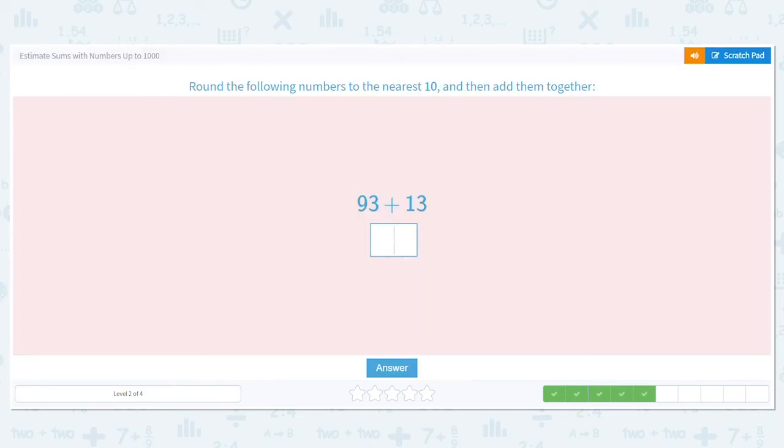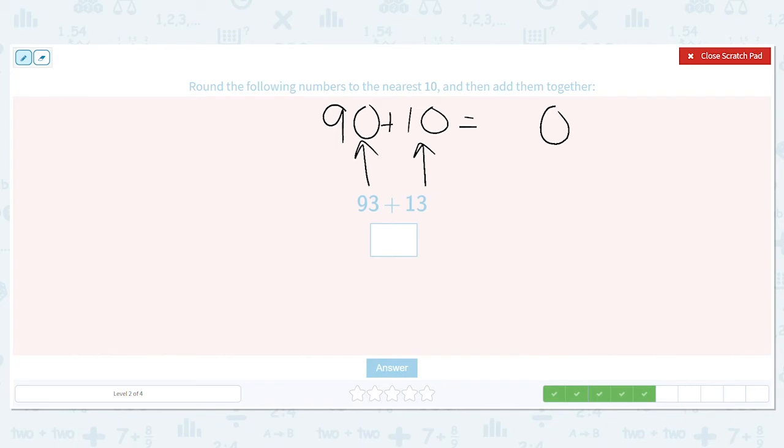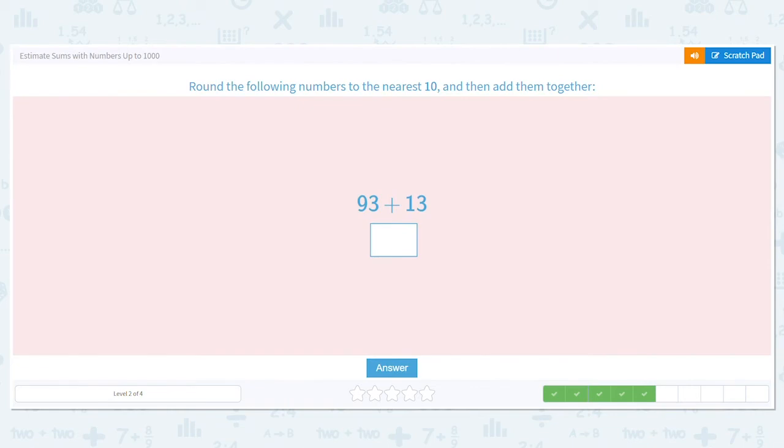Alright, let's do this one. Still rounding to the nearest 10. What does 93 round to? Does it round to 90 or 100? It rounds down to 90. How about 13? Is that closer to 10 or 20? It's 10. So what's 90 plus 10? 0 plus 0 is 0, 9 plus 1 is 10. So our estimate is 100.